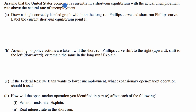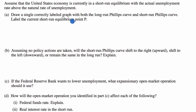Assume that the United States economy is currently in a short-run equilibrium with the actual unemployment rate above the natural rate of unemployment. Part A says to draw a single correctly labeled graph with both the long-run Phillips curve and the short-run Phillips curve, and label the current short-run equilibrium point P.